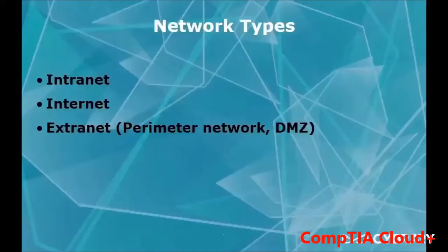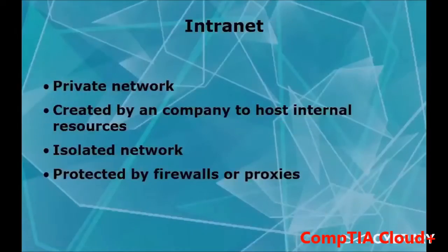Next we have network types: intranet, internet, and extranet. The extranet is also called your perimeter network because it's the outer reaches of your network, and this is also where your DMZ lies. Your intranet is a private network mainly created and maintained by the company, allowing them to give information to the internal network for quick access.